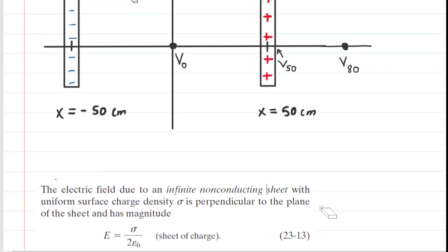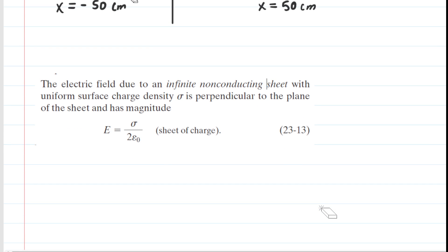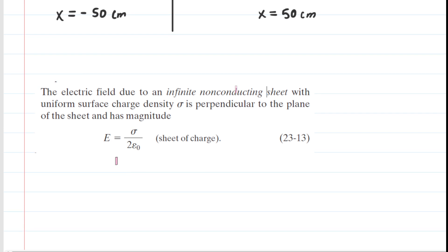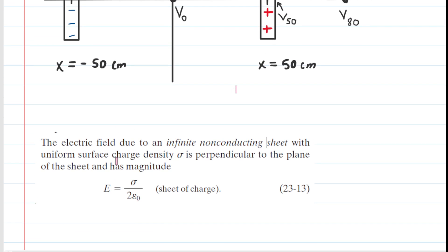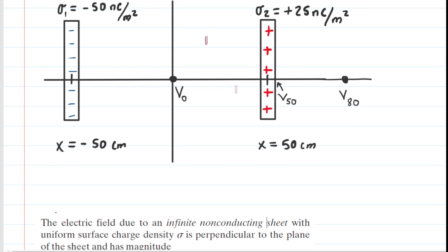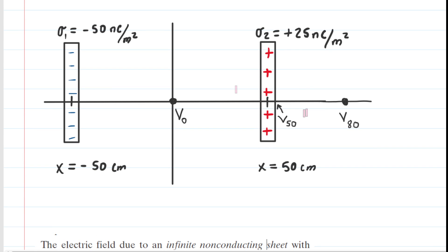From Gauss's Law, we learned in Chapter 23 that when you have an infinite non-conducting sheet of charge with uniform surface charge density, the electric field produced by such a structure is given by this equation. What we're going to do is use that equation to calculate the electric field located between the plates, and then also the electric field located on the far right side of the plates.